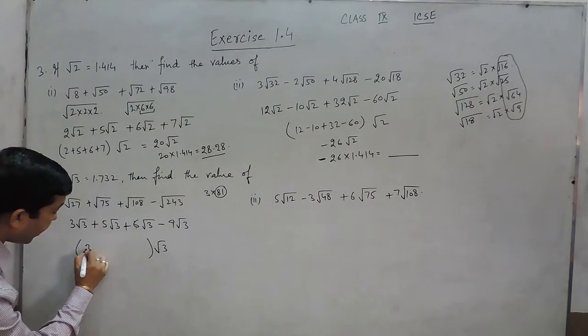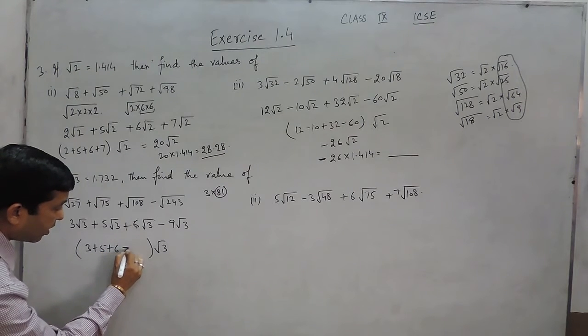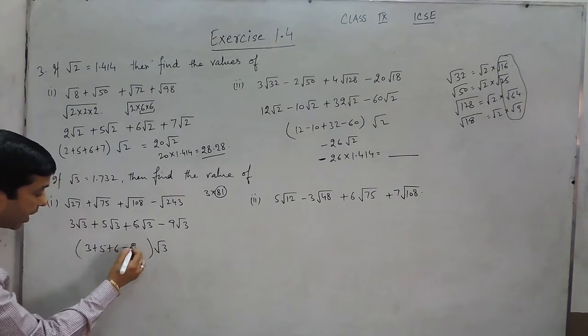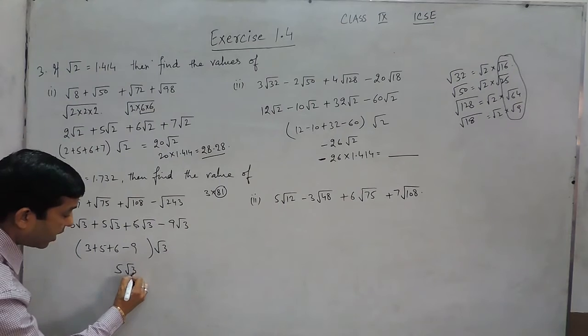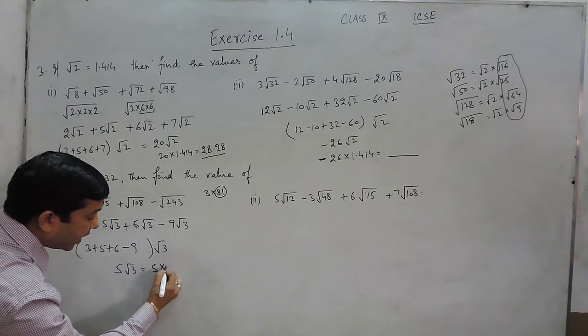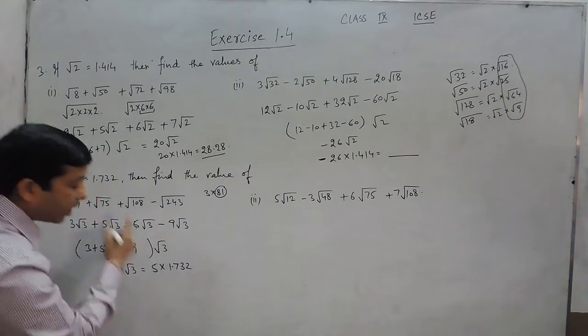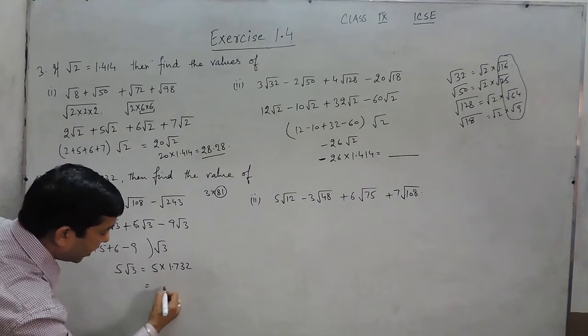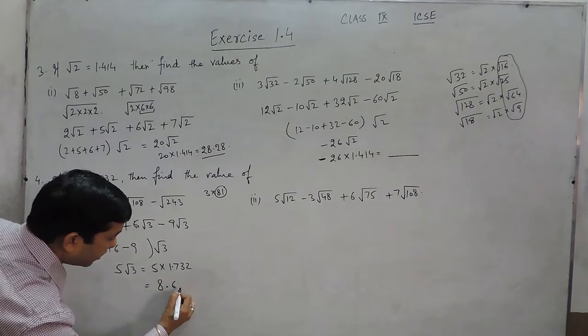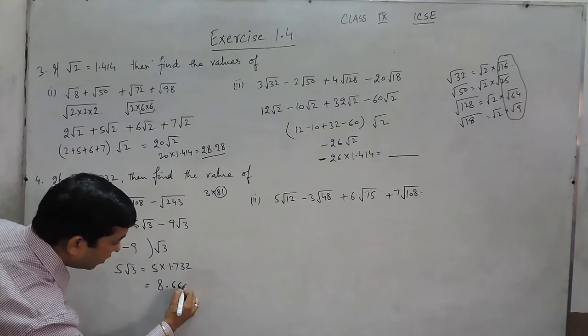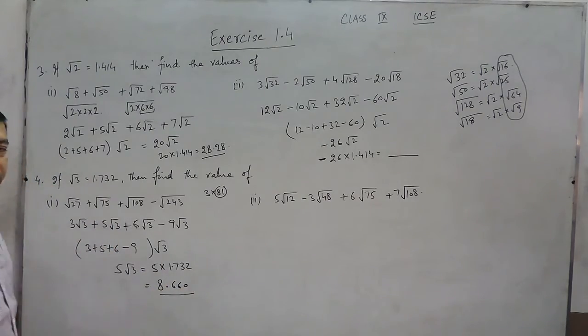So this is 3 + 5 + 6 - 9, so total it comes out to be 5√3. As we know the value of √3 is 1.732 given in this question, so the answer becomes 8.660 when we multiply these two values.